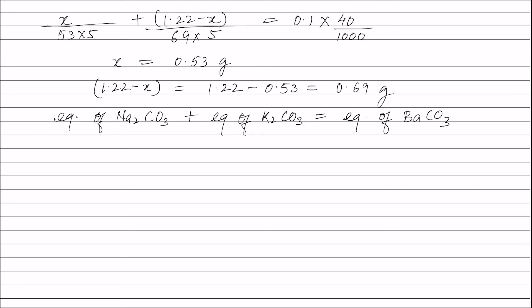Equivalents of sodium carbonate in 20 ml = (0.53/53) × (1/5), plus equivalents of potassium carbonate in 20 ml = (0.69/69) × (1/5), and this sum equals equivalents of barium carbonate.